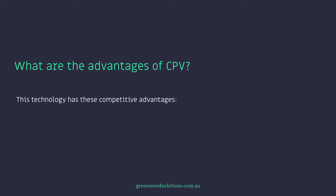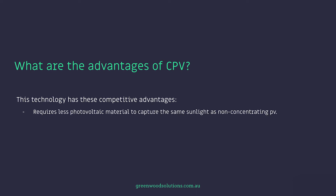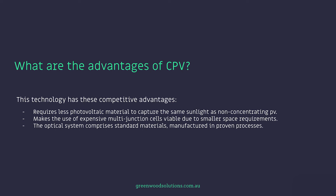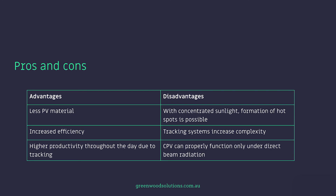This technology has these competitive advantages: it requires less PV material to capture the same sunlight as non-concentrating PV, and it makes the use of expensive multi-junction cells viable due to smaller space requirements. The optical systems comprised of standard materials are manufactured in proven processes, making it less dependent on the silicon supply chain, and optics are less expensive than multi-junction cells. The disadvantages include: concentrated sunlight can form hot spots; tracking systems increase project complexity; and the system can only properly function under direct beam radiation. The advantage is increased efficiency and higher productivity throughout the day due to tracking.